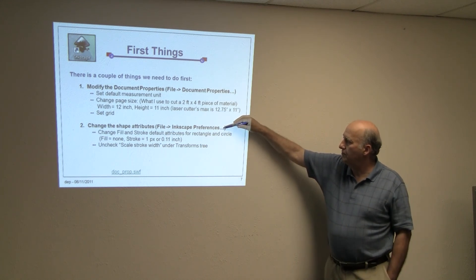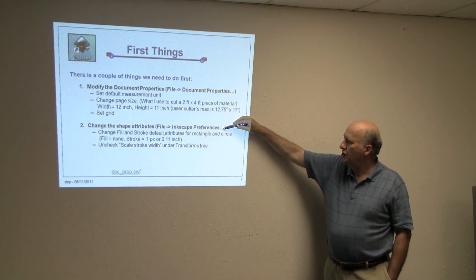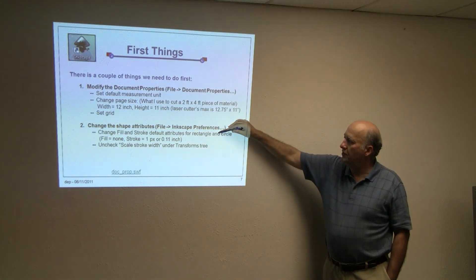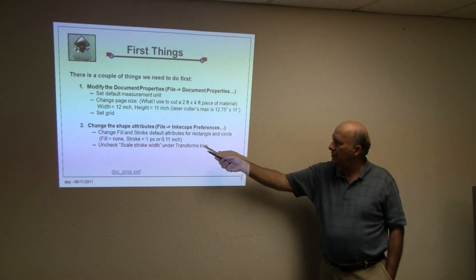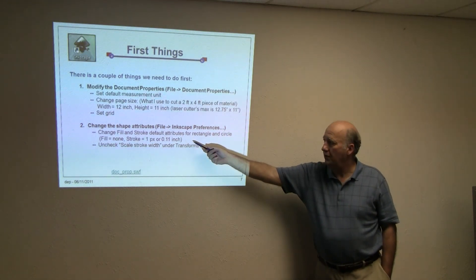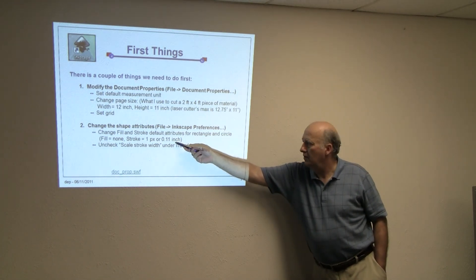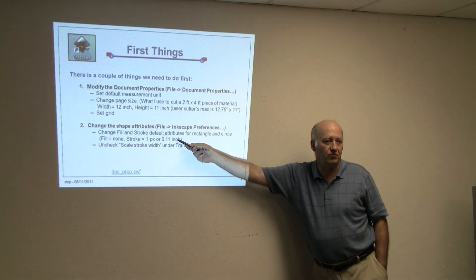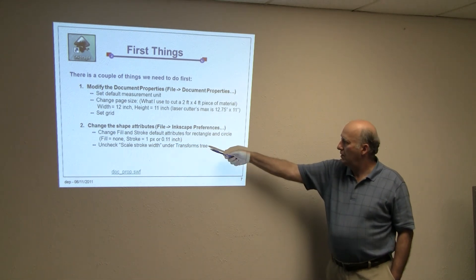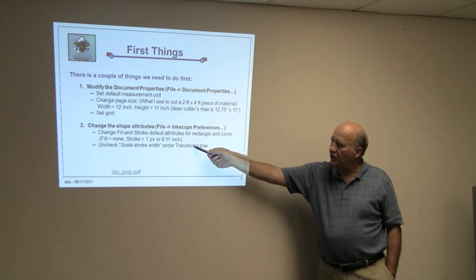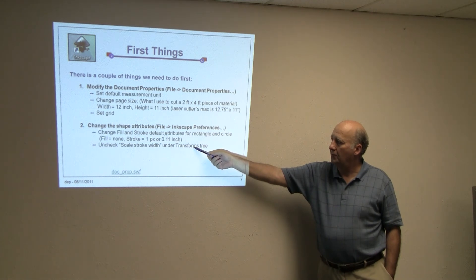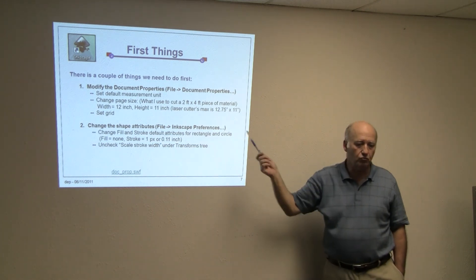We change the shape attributes. The biggest one that you want to change is the fill and stroke default attributes so that there's no fill and no stroke — well, the stroke is one pixel, which is what I usually use. And since we'll be in units, it will convert itself to the right number later on. I also uncheck the scale stroke width option under the transform.